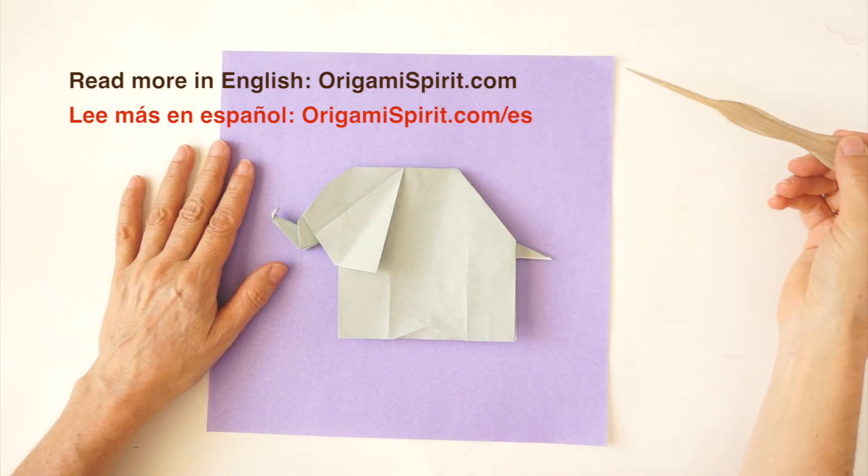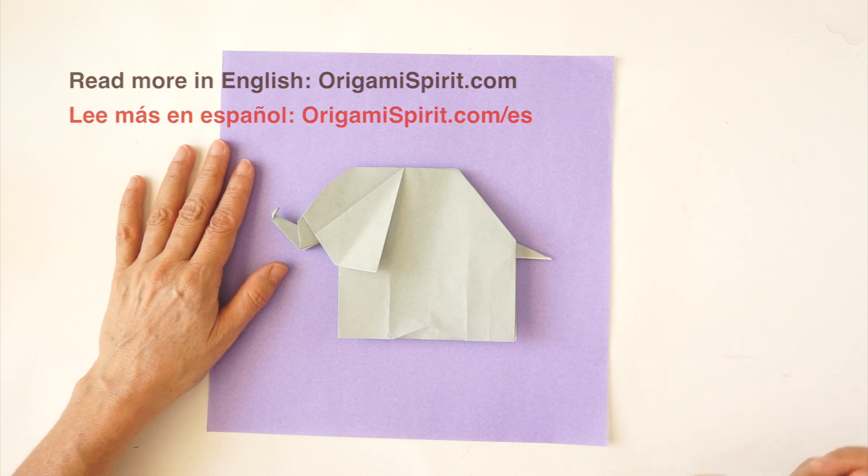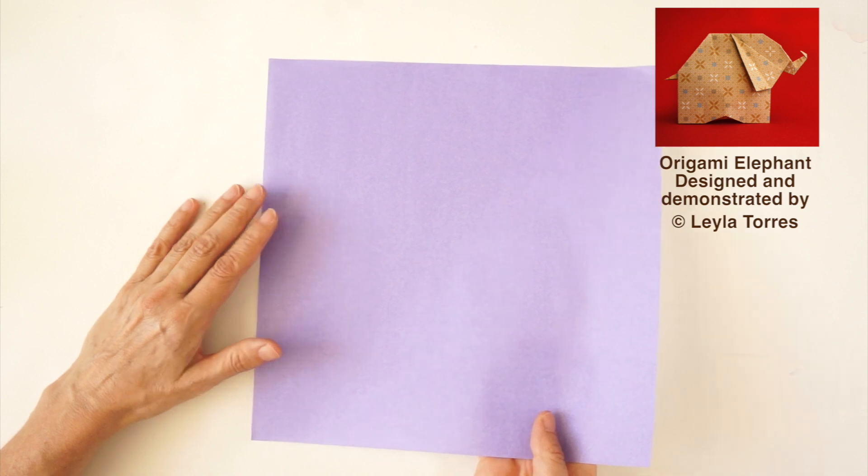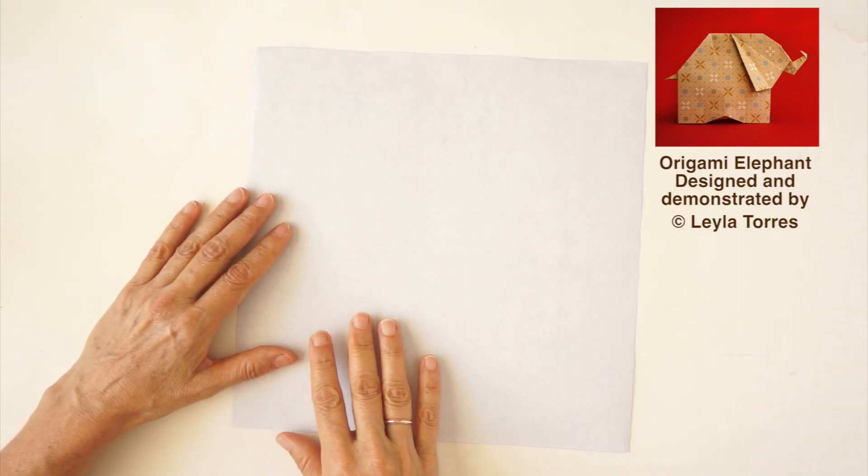I have a piece of paper 10 x 10 inches, 25 x 25 cm, paper of different color on each side. Begin with the white side facing up.